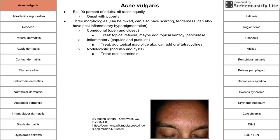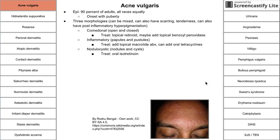The third morphology is nodulocystic, which has nodules and cysts, and you can treat this with oral isotretinoin — that's Accutane, the brand name. It's very effective but has many side effects to look out for. These three morphologies can be mixed, and you can also have scarring, tenderness, and post-inflammatory hyperpigmentation when a pimple clears.